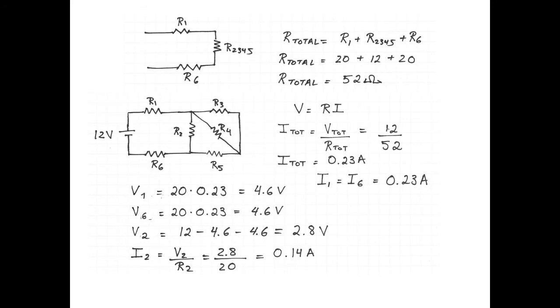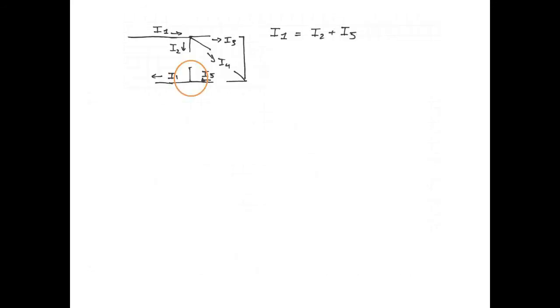Now, to figure out the voltages and currents in the other resistors, I'm going to redraw the diagram yet again. Now, from the junction that I've circled in orange, we can see that current I1 is equal to current I2 plus current I5. And that's a good thing because we know I1 and we know I2, so we can figure out I5 and then work our way backwards from there. So I5 is equal to I1 minus I2, and that gives us I5 is 0.09 amperes.